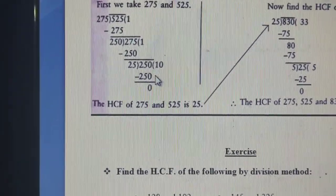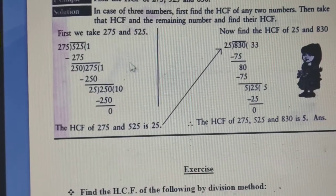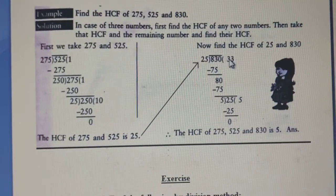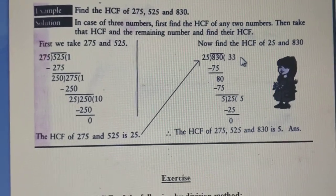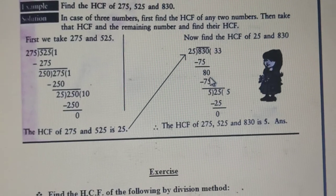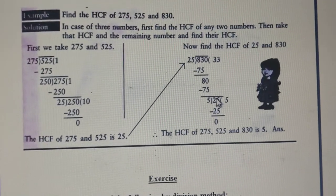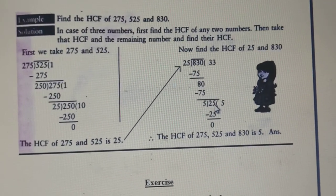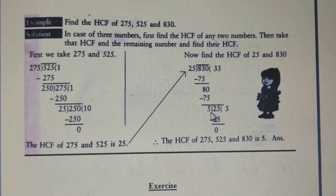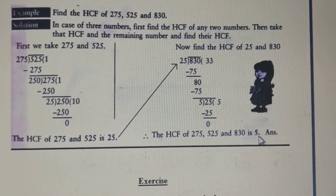We have now found the HCF of the first two numbers. The last divisor was 25. Now we take the third number, 830, and divide it by 25. 25 × 33 = 825, so the remainder is 5. Now 5 becomes the divisor and 25 becomes the dividend. 5 × 5 = 25, so we get remainder 0. The last divisor is 5, so the HCF of 275, 525, and 830 is 5.